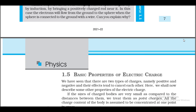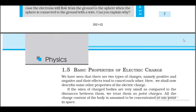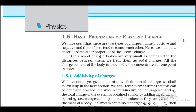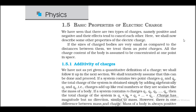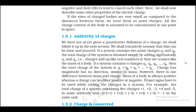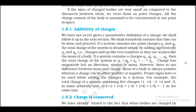1.5 Basic Properties of Electric Charge. We have seen that there are two types of charges, namely positive and negative, and their effects tend to cancel each other. If the sizes of charged bodies are very small as compared to the distances between them, we treat them as point charges — all the charge content of the body is assumed to be concentrated at one point in space.